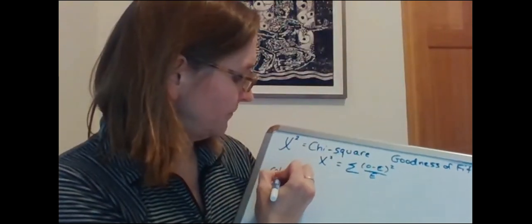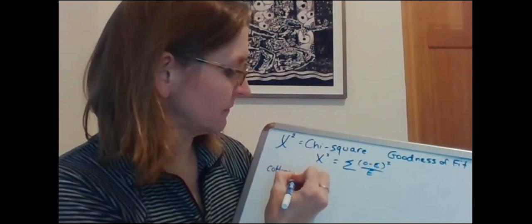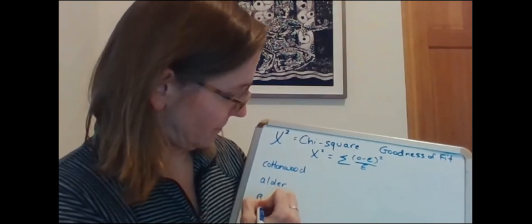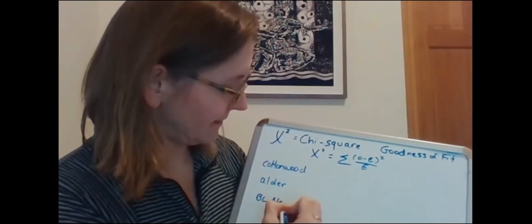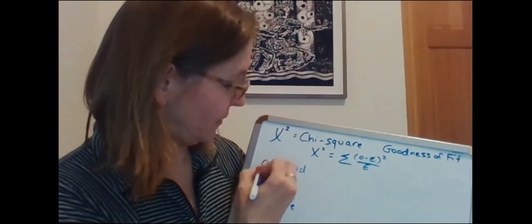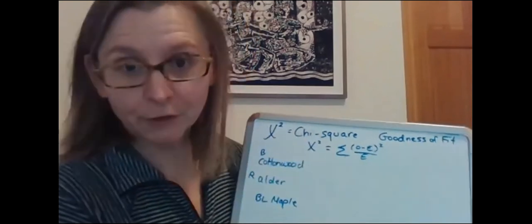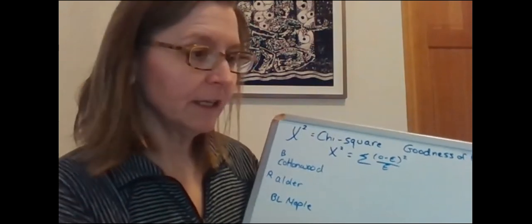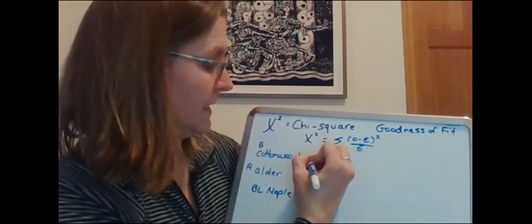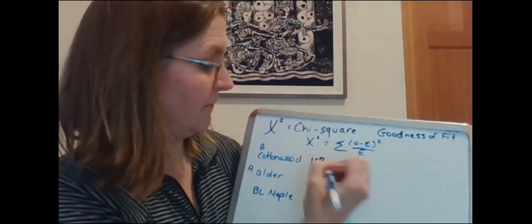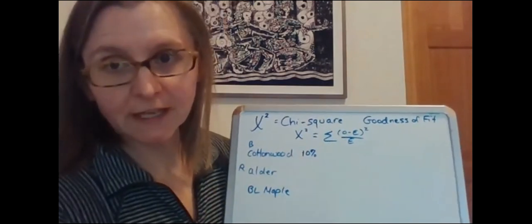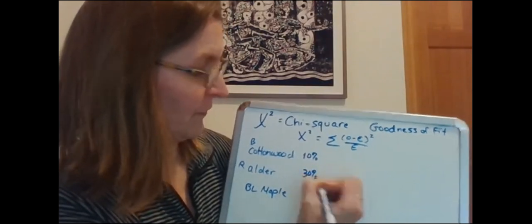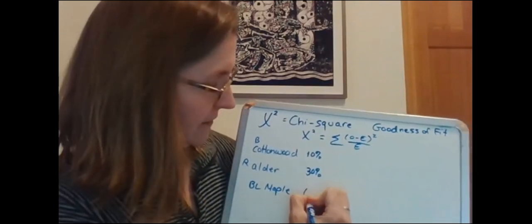I observe cottonwood, alder, and big leaf maple. I should specify we're talking about red alder and black cottonwood. When I go out and survey these trees in the area I determine that black cottonwood is about 10% of the proportion of the trees in that area that are deciduous native trees. We have 30% red alder and 60% big leaf maple.